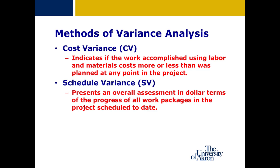The cost variance indicates whether the cost incurred today is more or less than what was originally planned to this point in the project — it tells you if you're under or over budget. The schedule variance calculates the value of all work packages or project tasks completed compared to planned, indicating whether a project is ahead or behind schedule. One important point is that this formula does not take into account whether a work package is on the critical path or not.